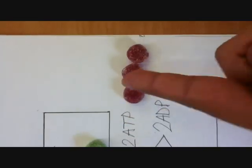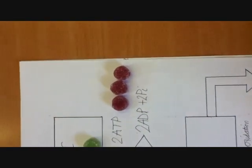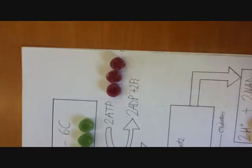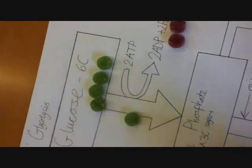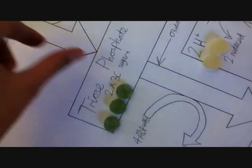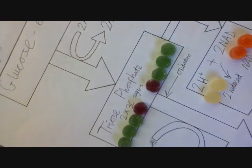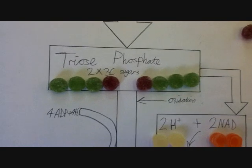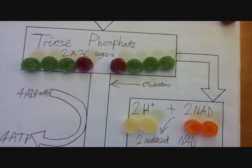If we look at this molecule of ATP — in reality there would be two of them, but because we don't have as many wine gummies as we should, we've only got one, so just imagine it's two. That ATP gets hydrolyzed into two molecules of ADP and two inorganic phosphates. Now we've got glucose with a phosphate group on it, which is good.